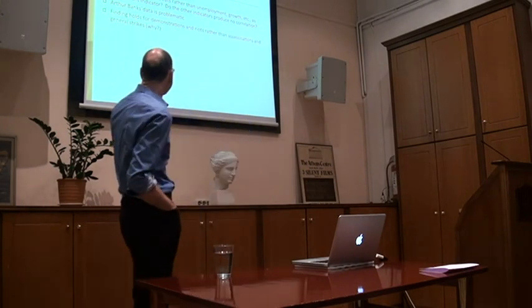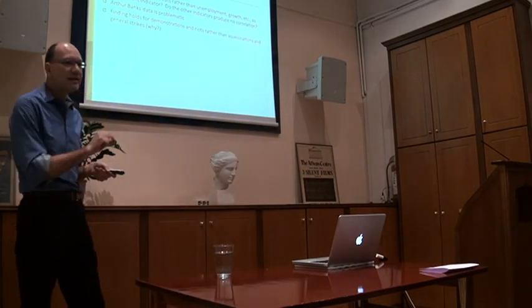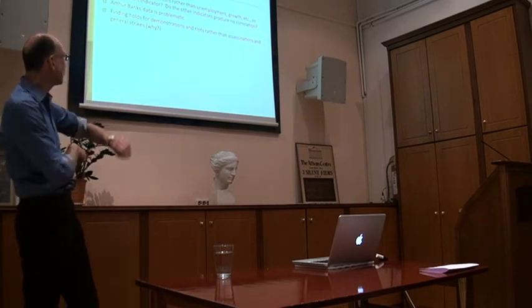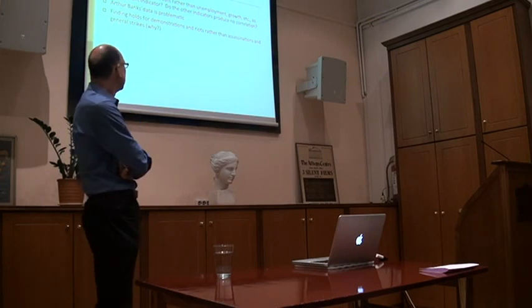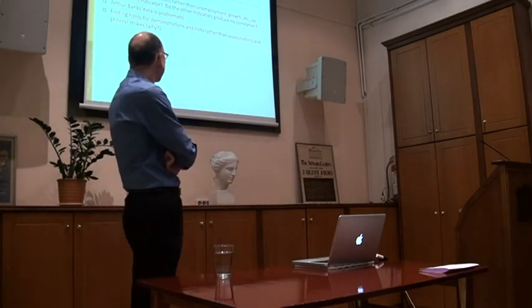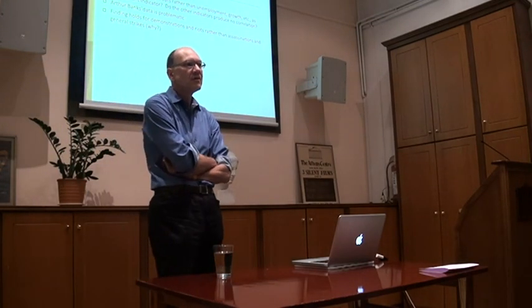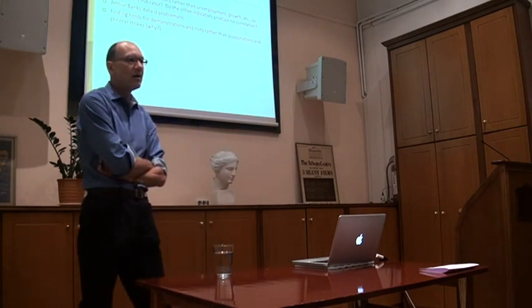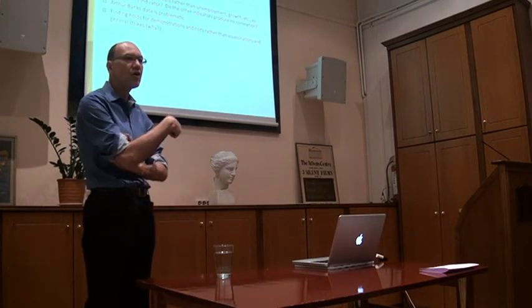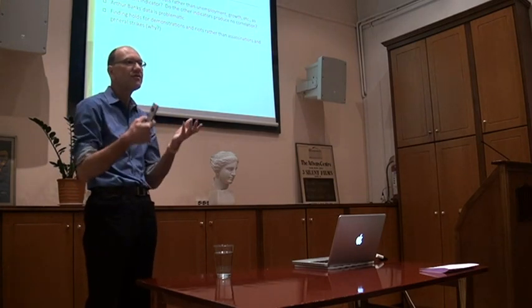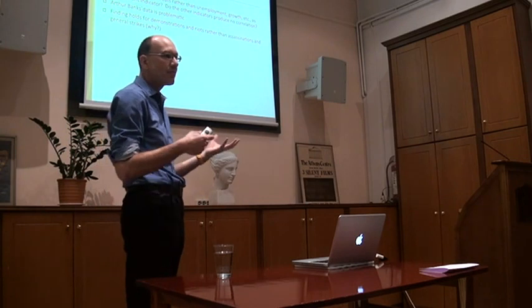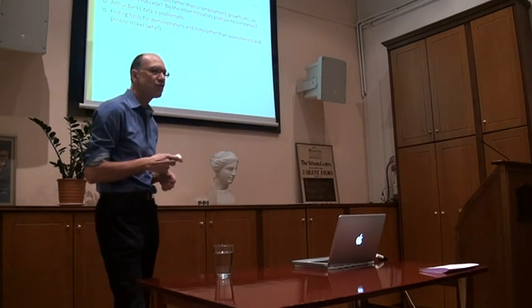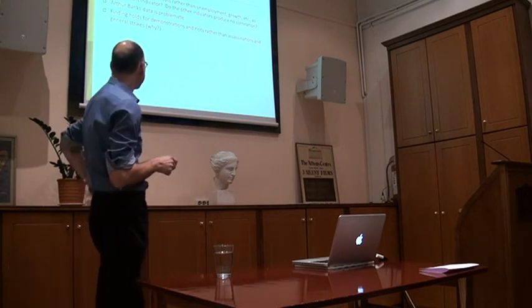Third point is that the finding actually does not hold across all dimensions of public unrest. It holds for demonstrations and riots but not assassinations or general strikes. Why is it that different forms of public unrest are responsive to public expenditure cuts but not other measures? That raises questions about, in the absence of a better theory of how these things are connected, perhaps data artifacts.